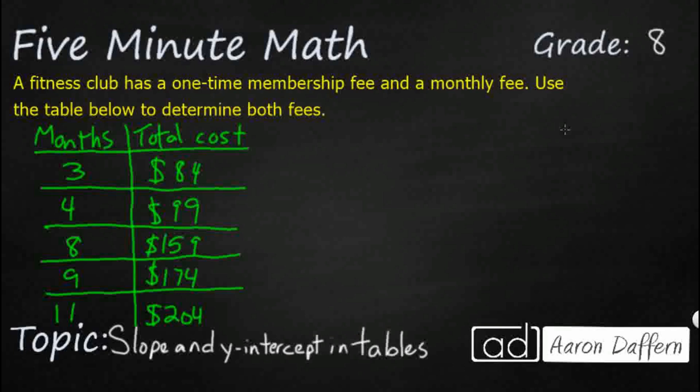So we have a problem situation here. A fitness club has a one-time membership fee and a monthly fee. We need to use the table below to determine these fees. We've got the total cost for this gym after 3 months, 4 months, 8 months, 9 months, and 11 months.